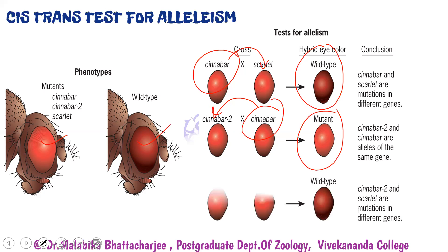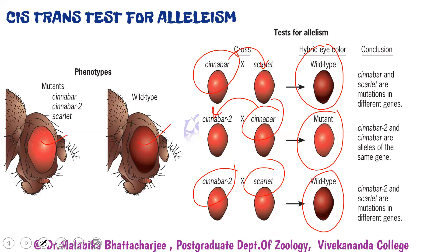The third combination is crossing cinnabar 2 with scarlet, and we get a fly with wild type eye color, indicating that cinnabar 2 and scarlet are mutations in different genes. So of these three mutants, scarlet is in a different gene compared to cinnabar and cinnabar 2. Cinnabar and cinnabar 2 fall in the same complementation group, while scarlet is in a different gene. This is how the cis-trans test for allelism helps locate whether mutations are alleles of the same gene or fall in two different genes.